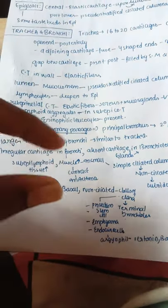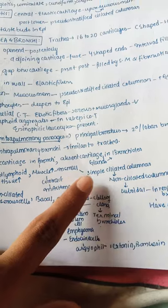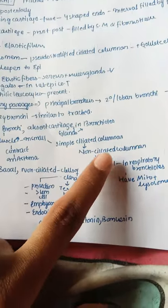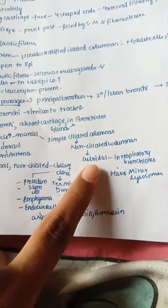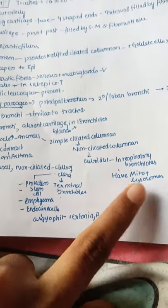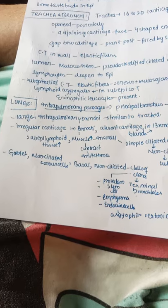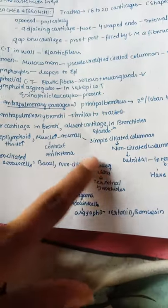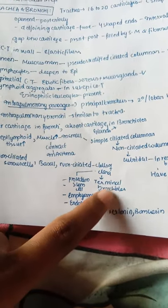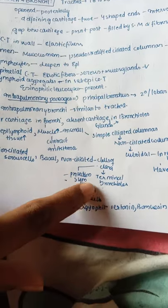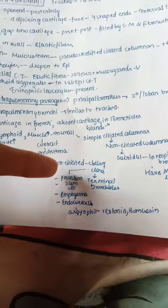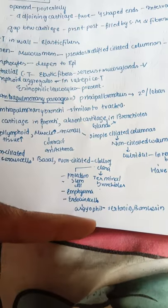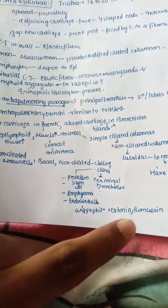The bronchioles are first simple ciliated columnar, then convert to non-ciliated columnar, and then to cuboidal in the respiratory bronchioles, having mitochondria and lysosomes. They contain goblet cells, non-ciliated serous cells, basal cells, and Clara cells. Clara cells are mainly present in terminal bronchioles and protect against microbes and dust particles. They also act as stem cells, protect against emphysema, and are endocrine cells secreting surfactant proteins, serotonin, and bombesin.